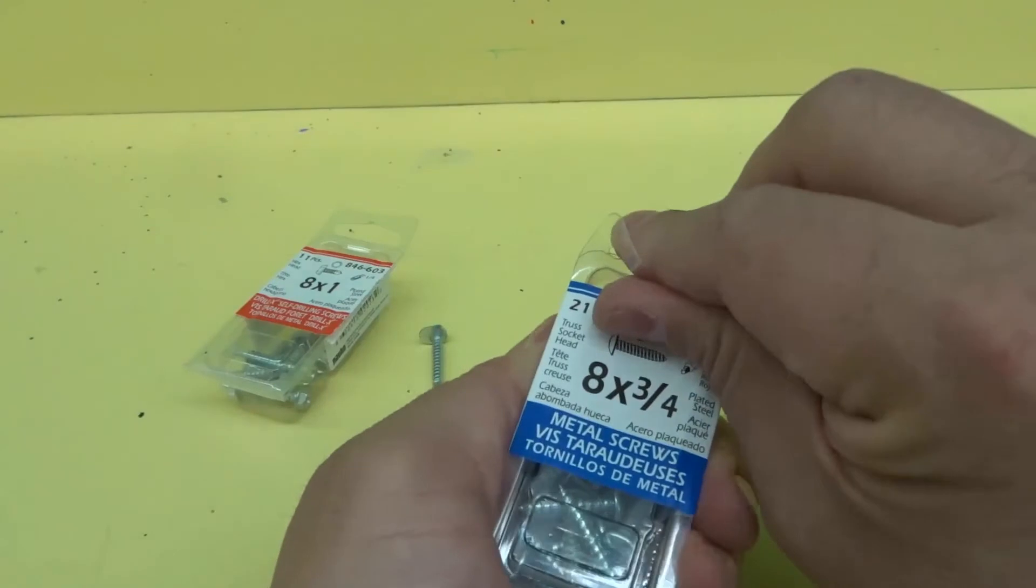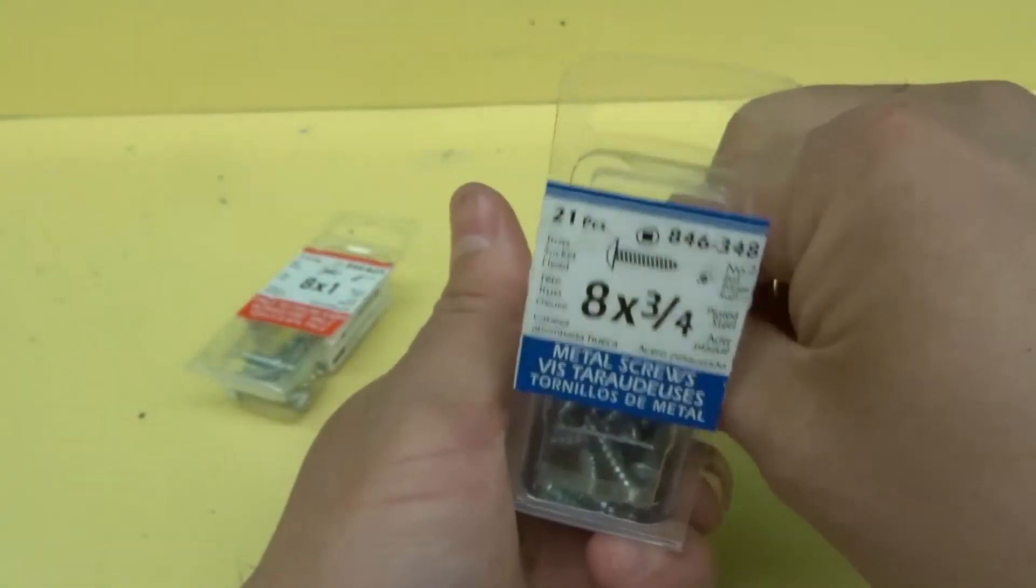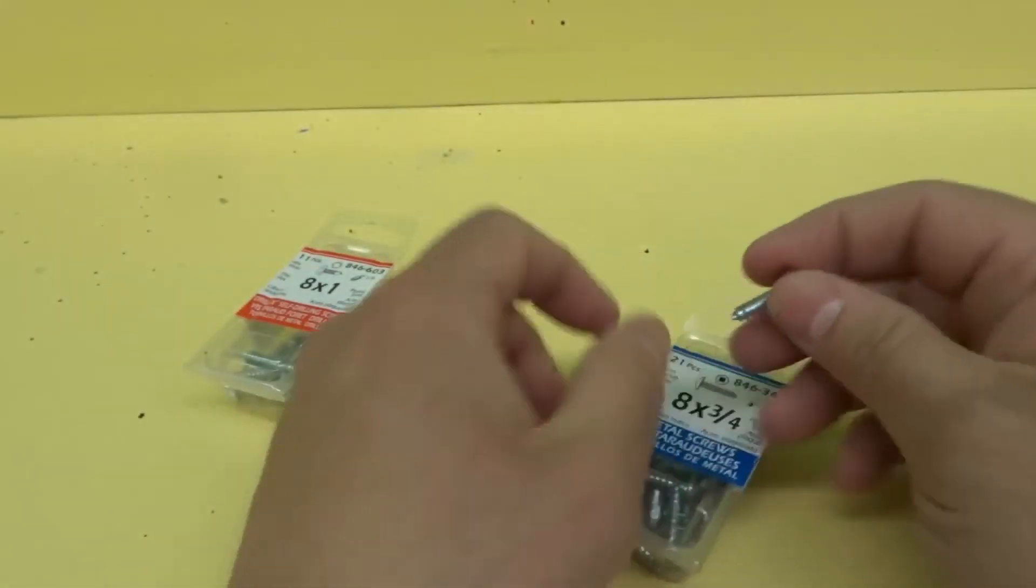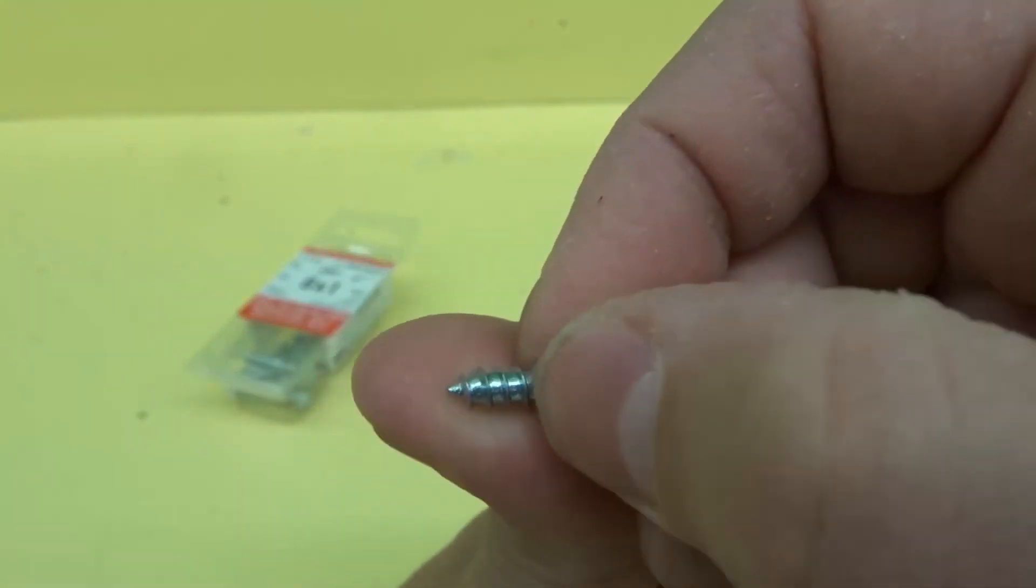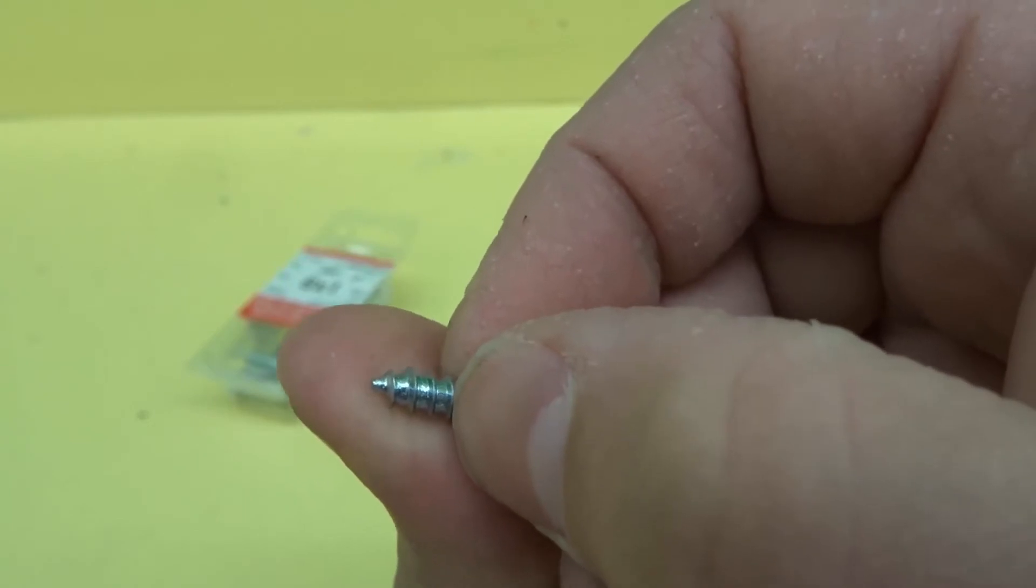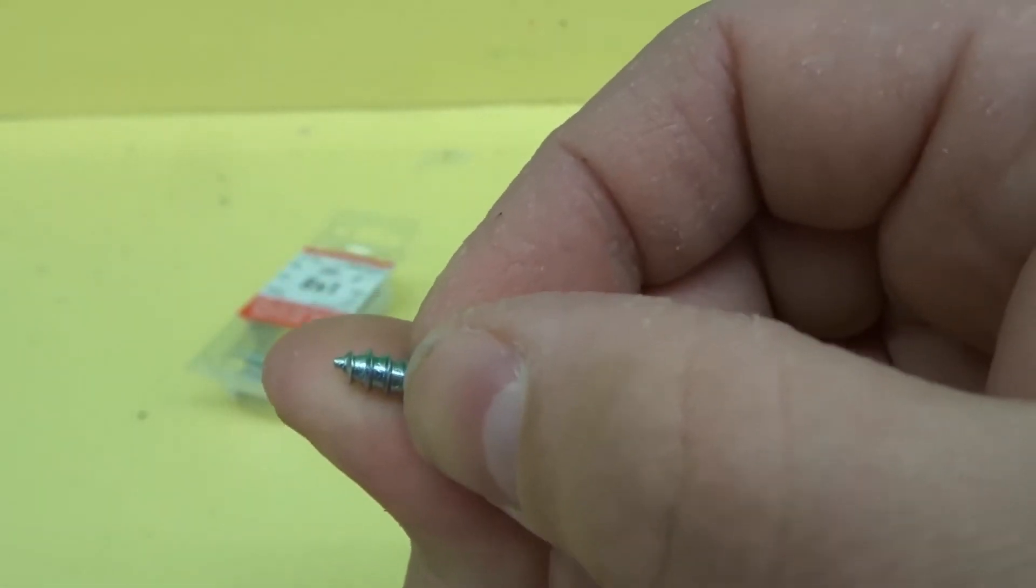On the other hand, we have a self-tapping screw. As you can see, a self-tapping screw has this regular tip at the end, and in most situations will need some sort of pilot hole.